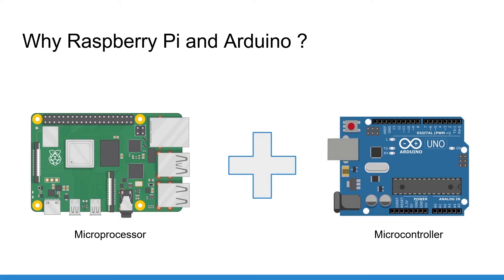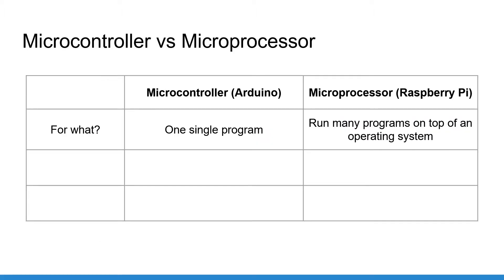The microcontroller on the Arduino is quite simple. It's going to run just one program at the maximum speed capacity. On the Raspberry Pi you have a microprocessor, which is something completely different. A microprocessor is what you also have on your computer, on your phone, etc. You usually install an operating system on it and then you can run many programs to do many different things.